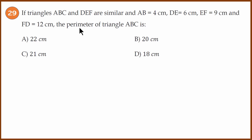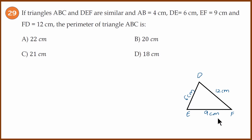Question 29: similar triangles ABC and DEF are given. DE equals 6 cm, EF equals 9 cm, FD equals 12 cm, and AB equals 4 cm. BC and AC are not given and we need to find them.